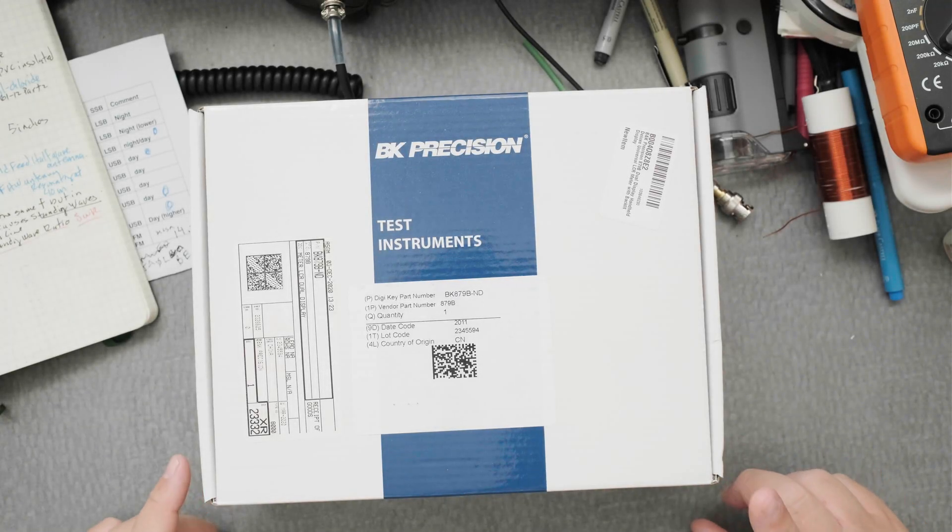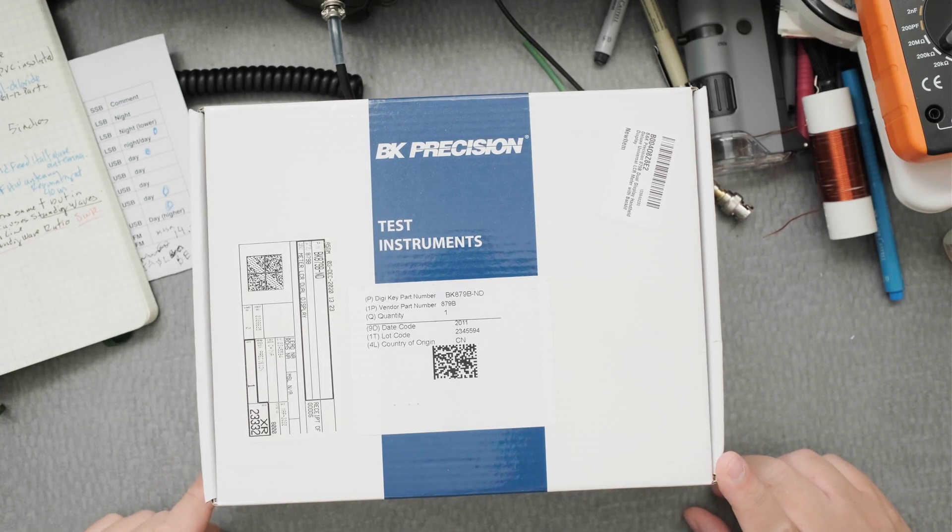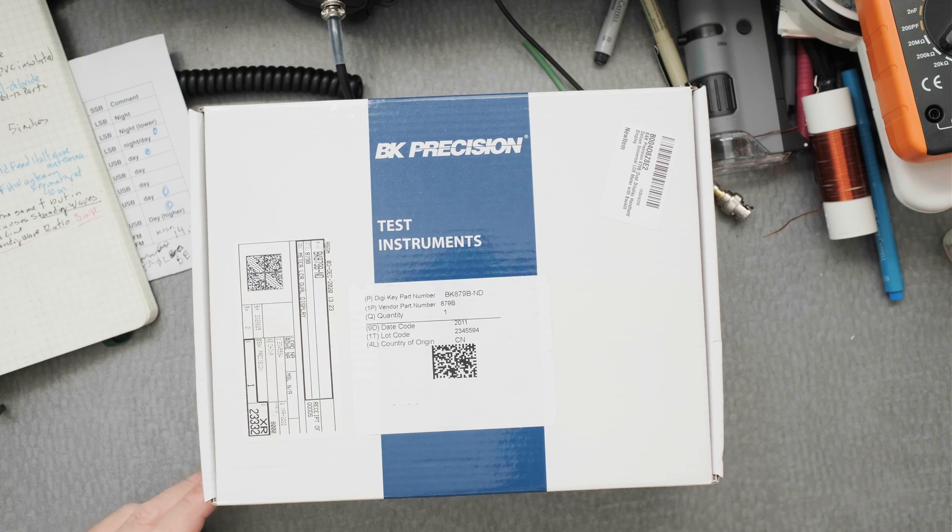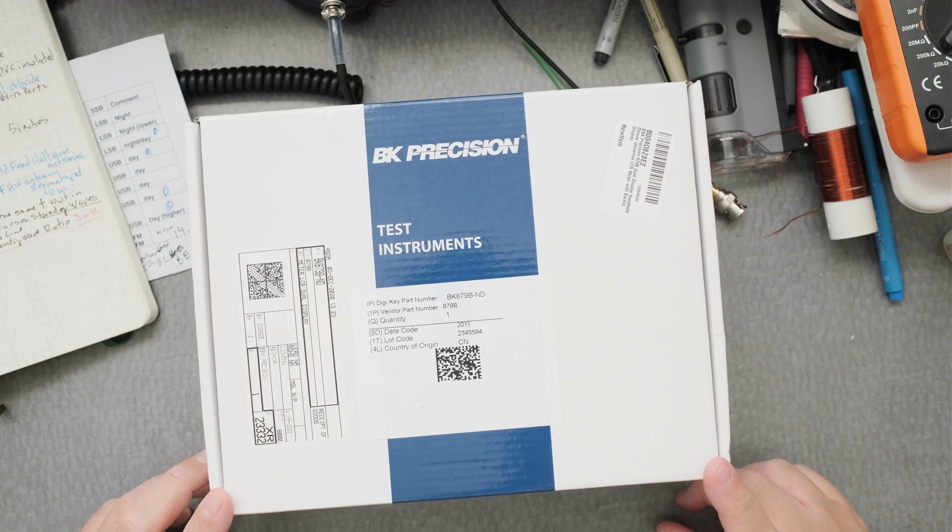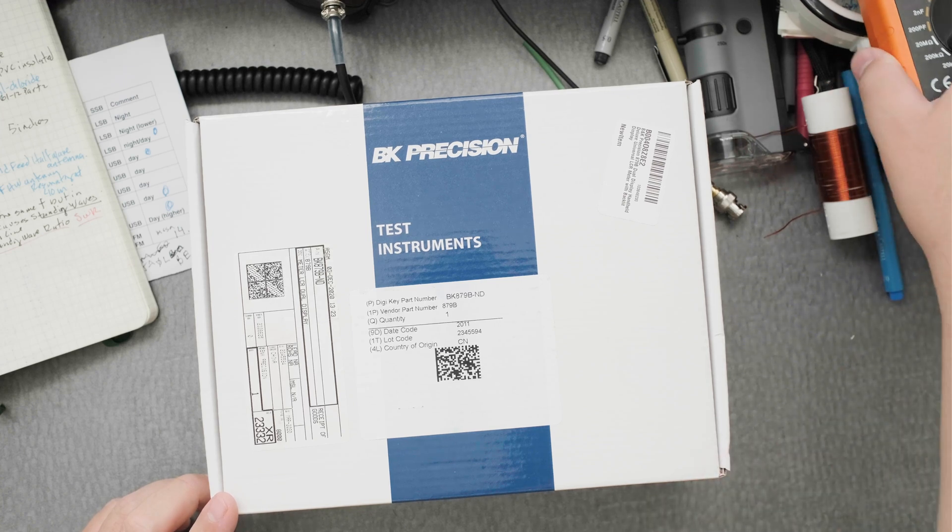Hi everyone, so this is an LCR meter, the BK Precision BK 879B. I bought this one because I wanted to see how much more accurate it would be compared to the less expensive Proster BM 4070.